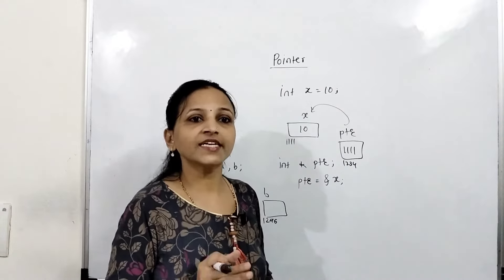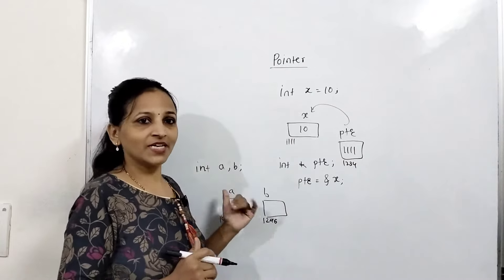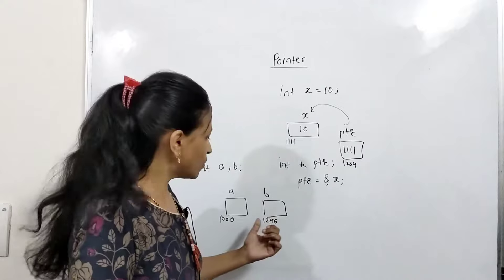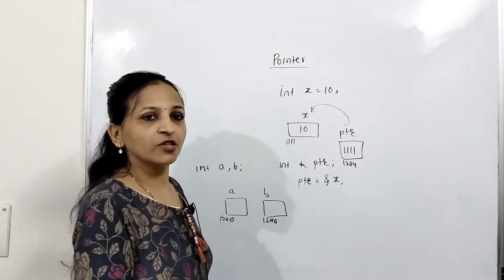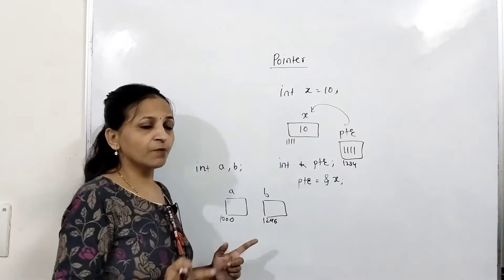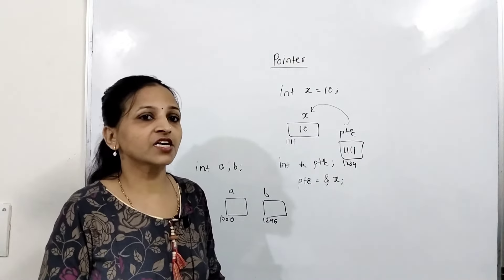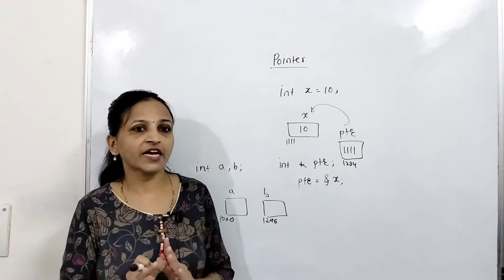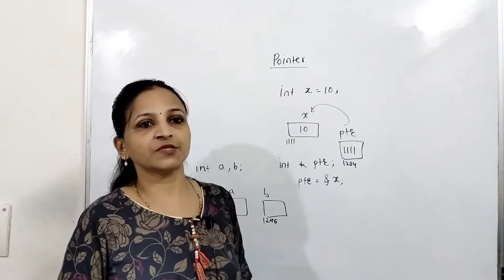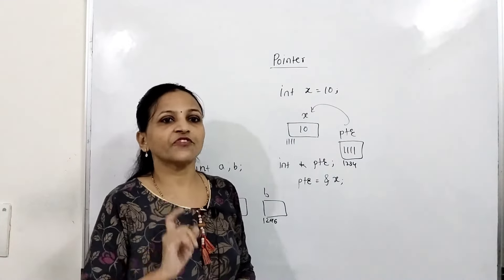But a pointer is also called a derived data type — derived means it is somewhat modified. An integer normal variable can hold a whole number, but if you want to store an address in a variable, it is technically an unsigned integer. C and C++ provide the pointer concept for this. A pointer is again a variable, but it can hold an address of any other variable.